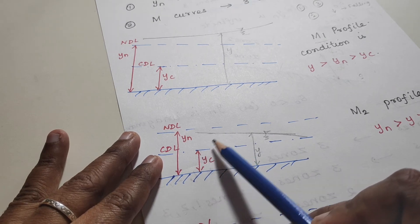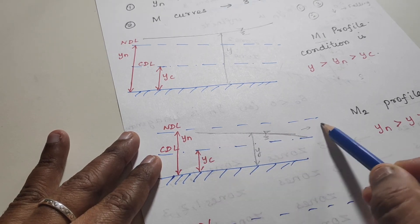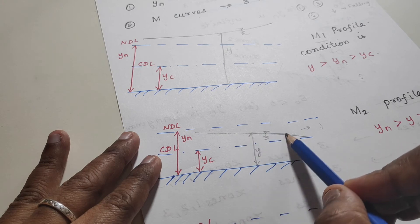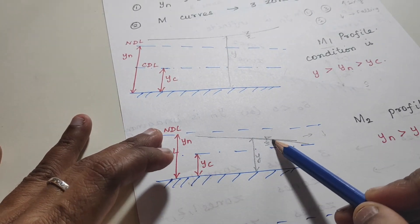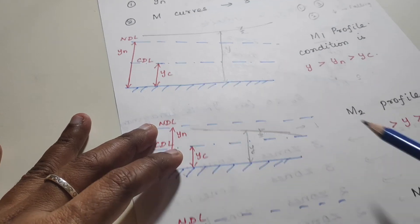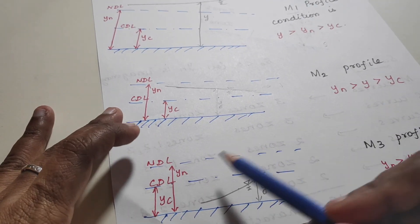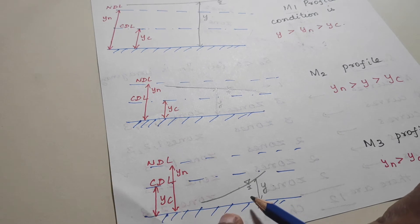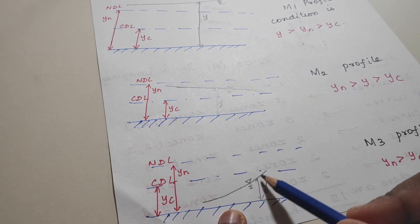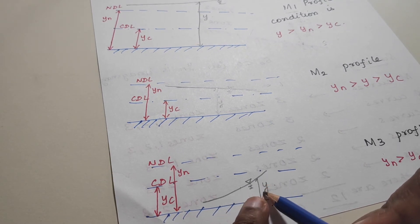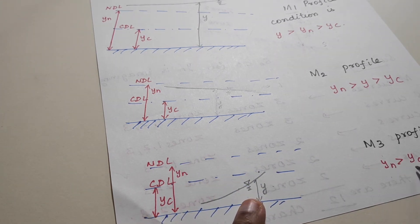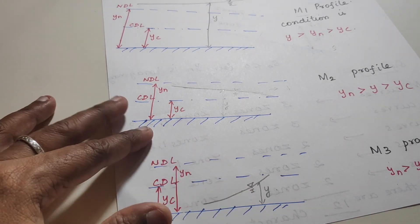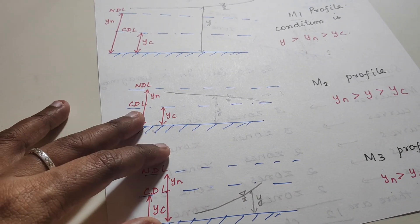For an M2 profile, the water flows between the normal depth line and the critical depth line — in zone 2, which is a falling profile. The condition is: yn > y > yc. For an M3 profile in zone 3, it is again a rising profile, but the actual depth is less than both. The condition is: yn > yc > y.